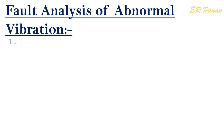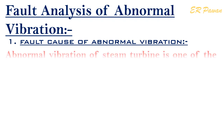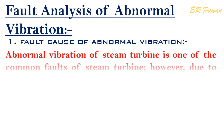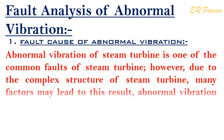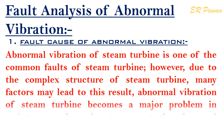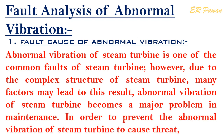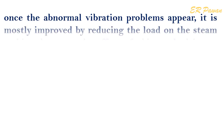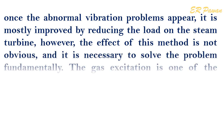Fault analysis of abnormal vibration: Abnormal vibration of the steam turbine is one of the most common faults. However, due to the complex structure of the steam turbine, many factors may lead to this result, making abnormal vibration a major problem in maintenance. In order to prevent abnormal vibration from causing threats, once such problems appear, it is mostly addressed by reducing the load on the steam turbine. However, the effect of this method is not obvious, and it is necessary to solve the problem fundamentally.